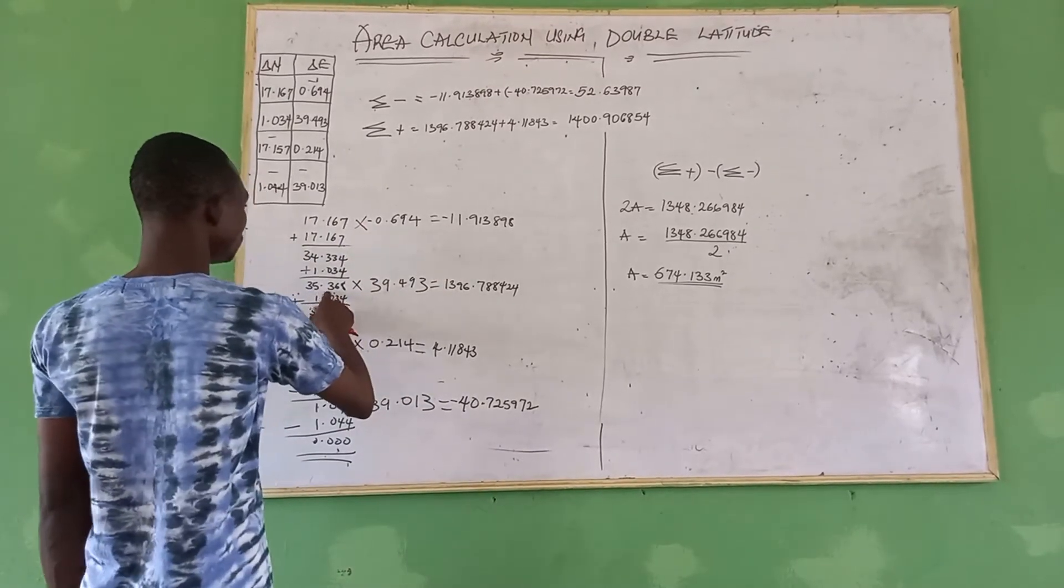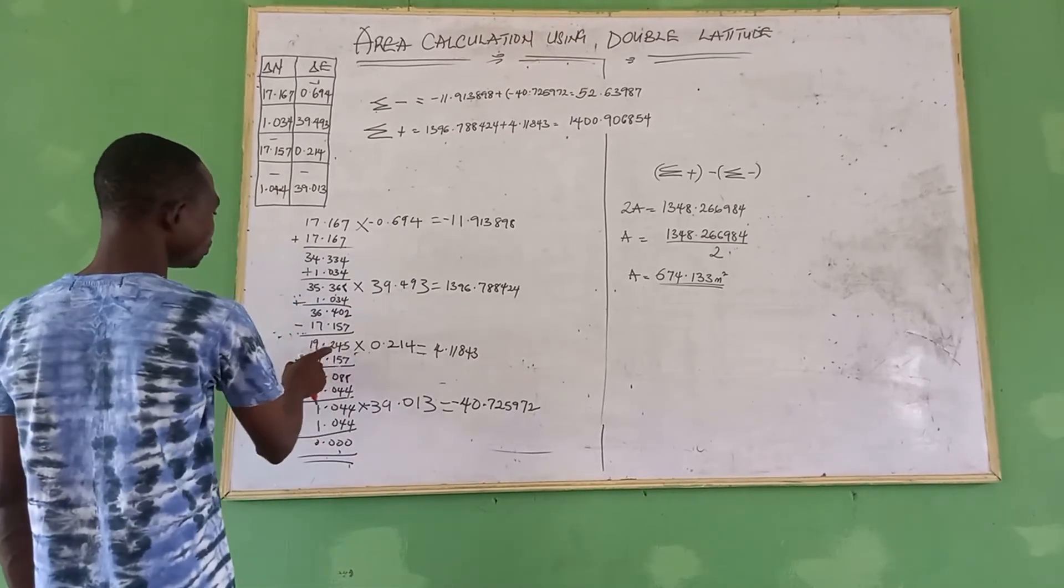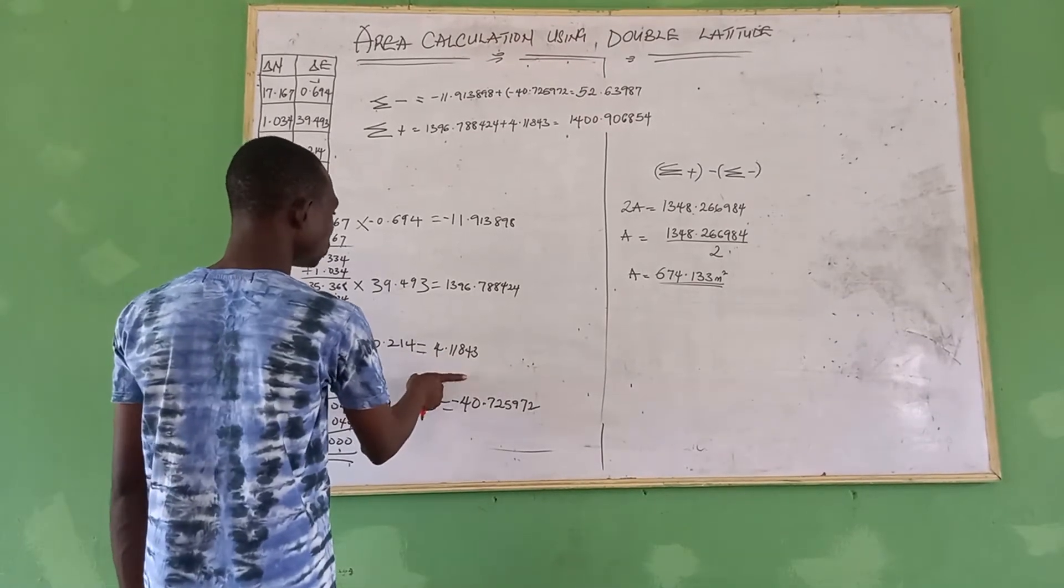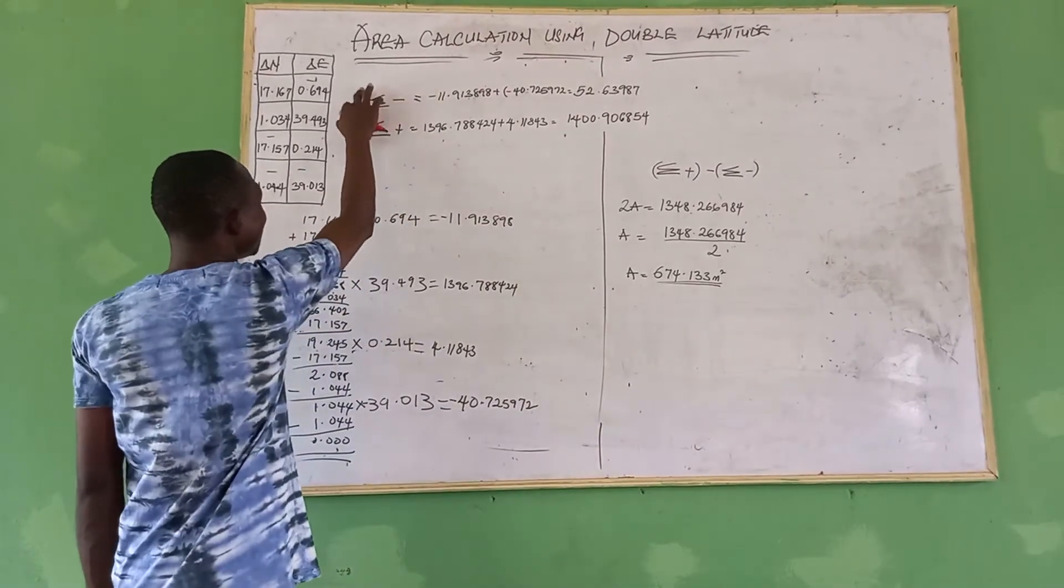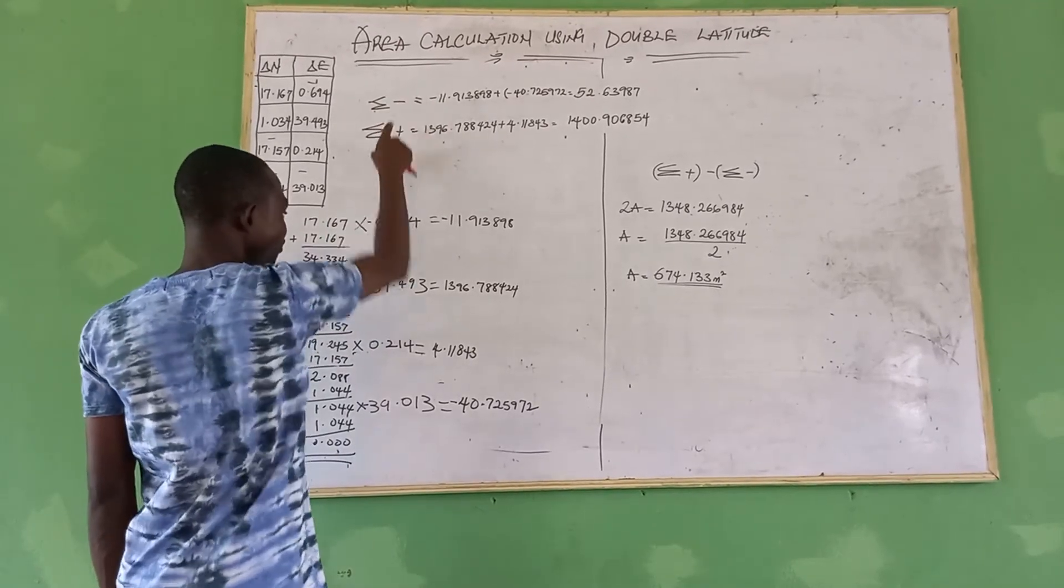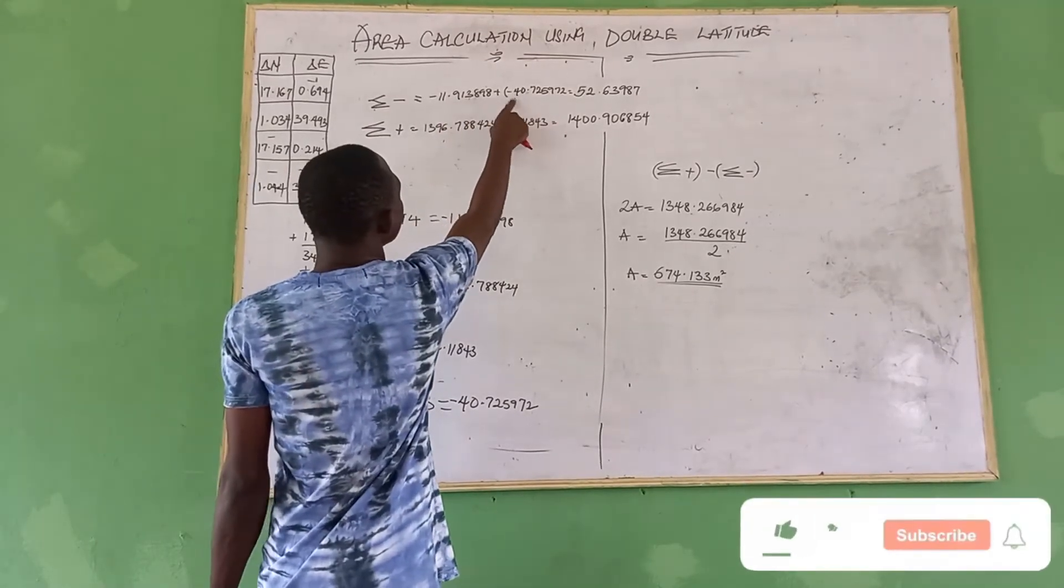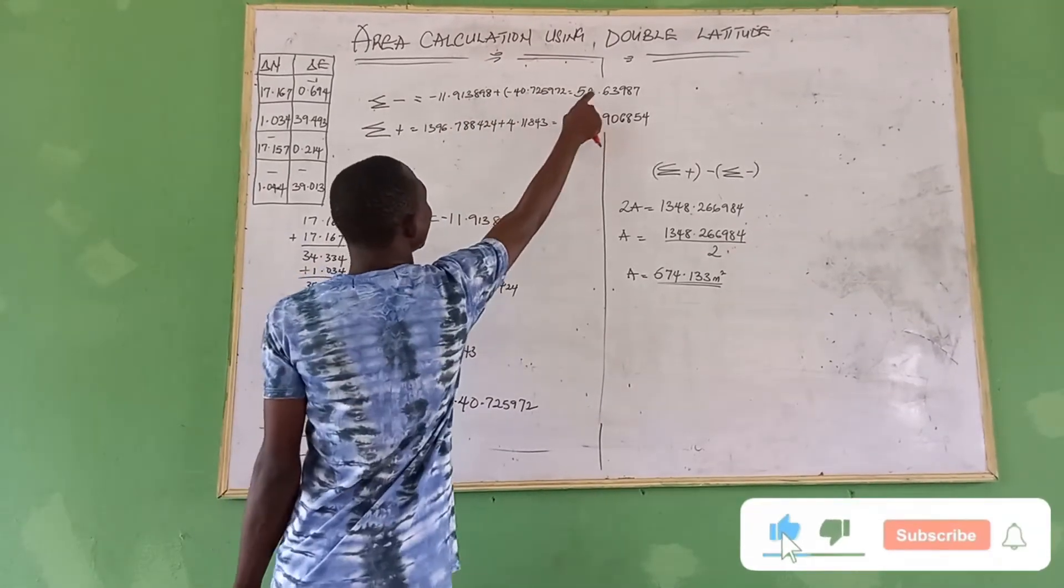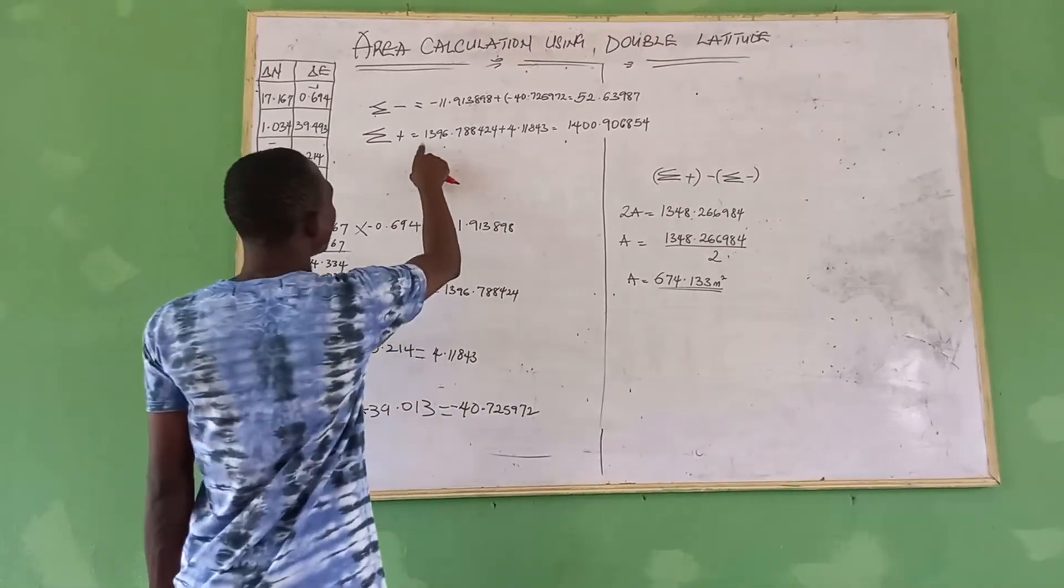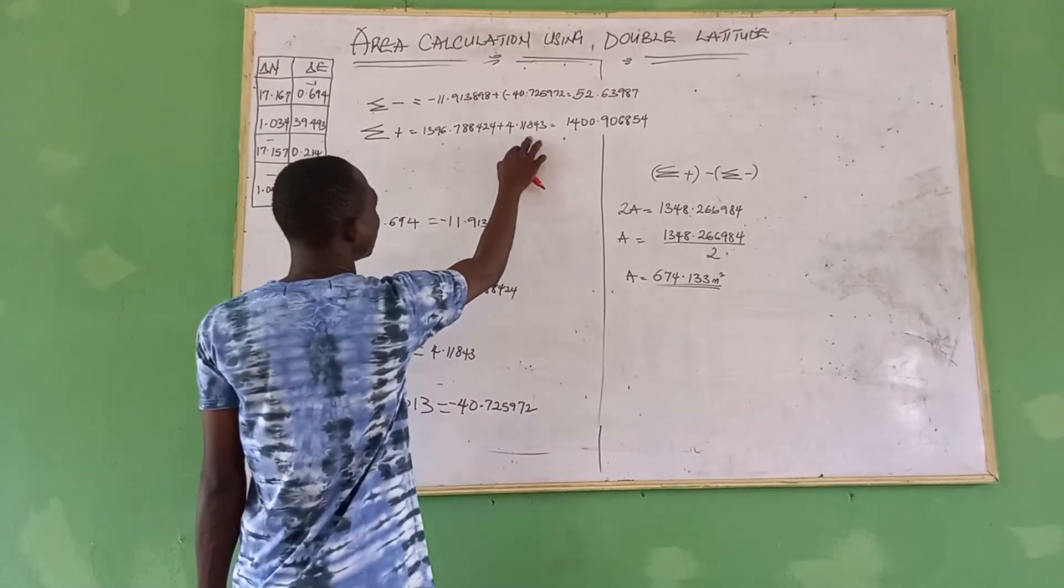This by this gives us this. Since here is negative value by negative value, this one is usually negative value. This falls, we give us positive value. This multiply by this gives us positive value. So that was why I was able to achieve this. On the body, I have summation of all negative, which is this and this. That is this plus this. By summation of all positive, which is this plus this, you can see we have this.